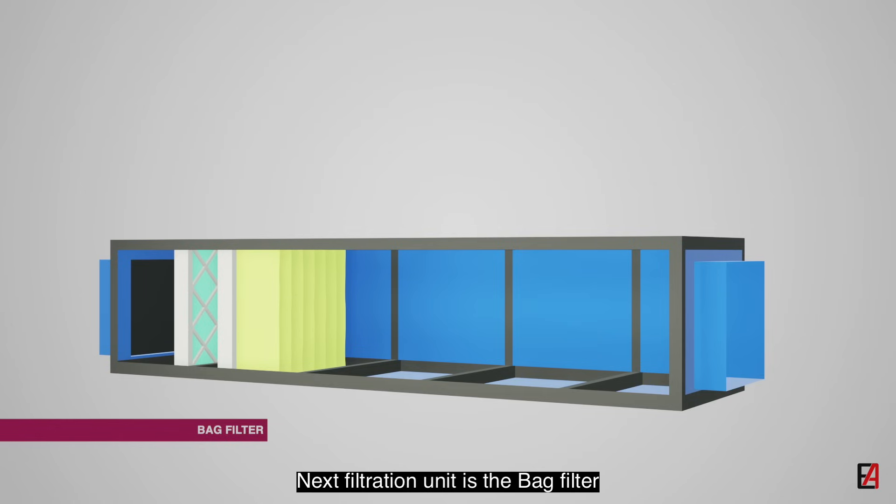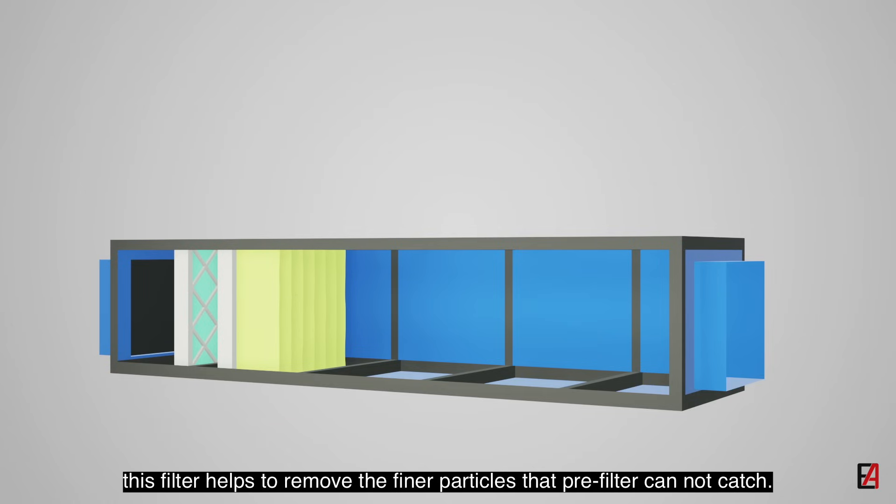Next filtration unit is the bag filter. This filter helps to remove the finer particles that pre-filter cannot catch. It is also used to remove contamination from the outside air.